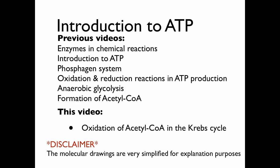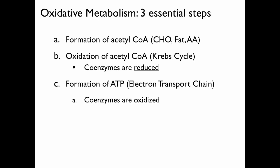As a disclaimer, I've simplified some of the molecular drawings for explanation purposes. In the last video, we covered how acetyl-CoA was formed from glucose molecules and fatty acids. Once acetyl-CoA is formed, it can be oxidized in the Krebs cycle where coenzymes are reduced, and then those coenzymes can be oxidized in the electron transport chain. This video is going to cover the oxidization of acetyl-CoA.